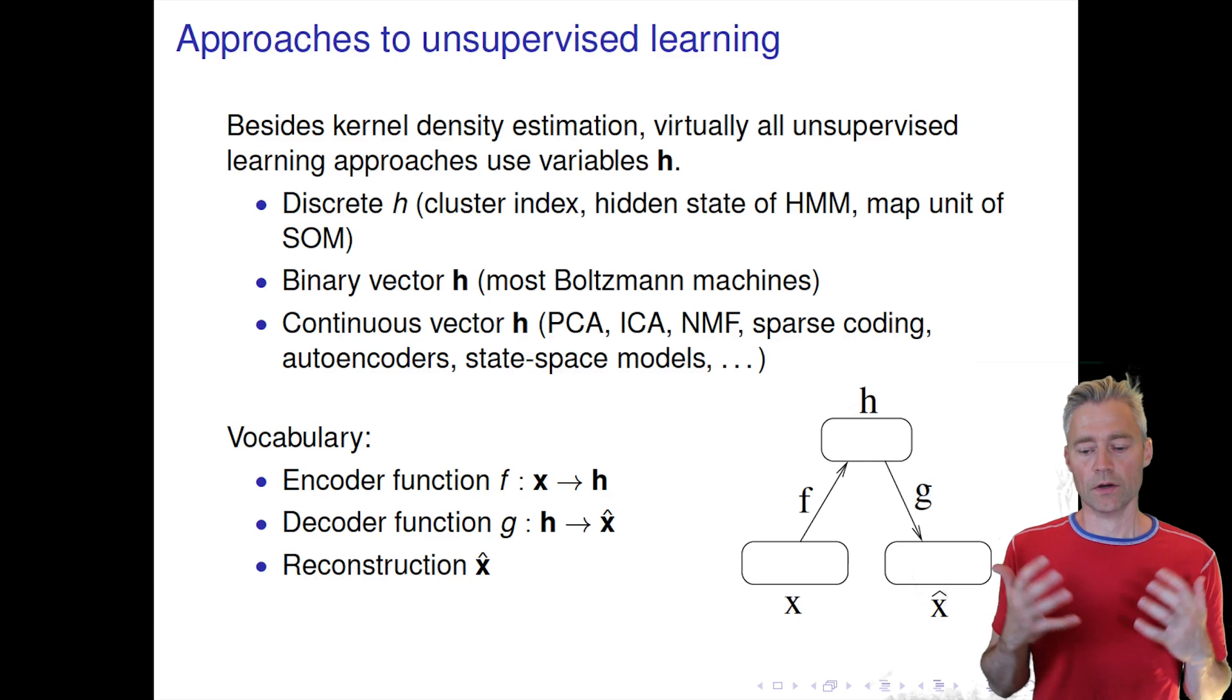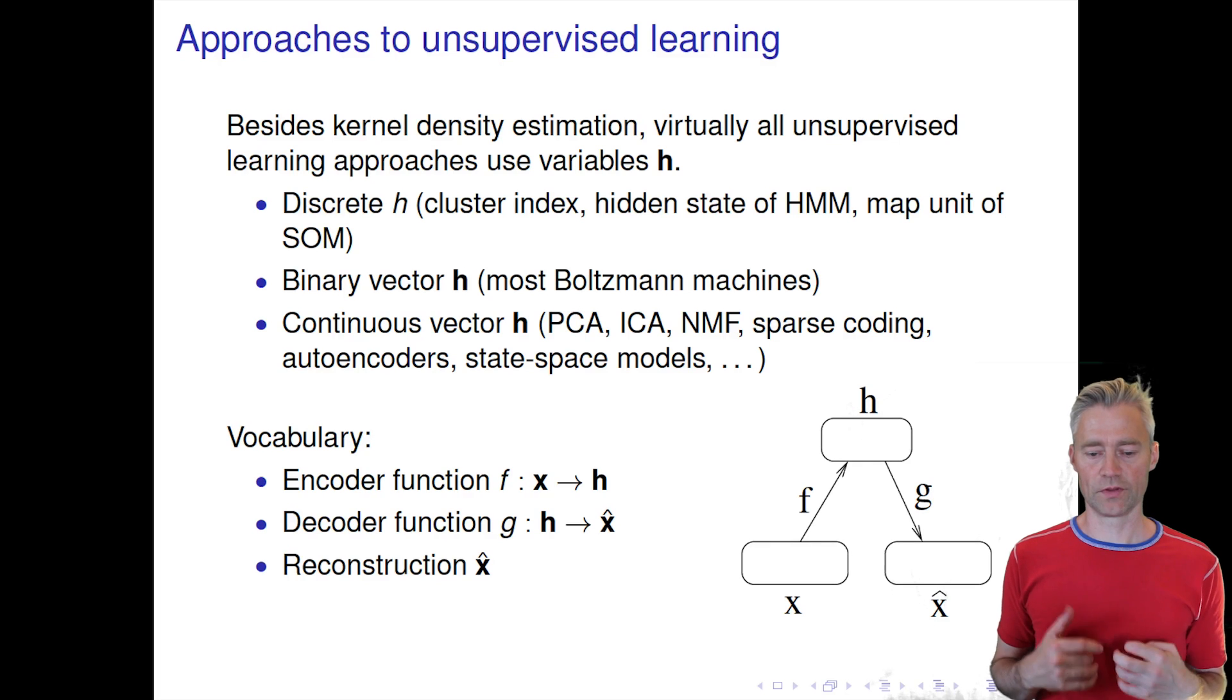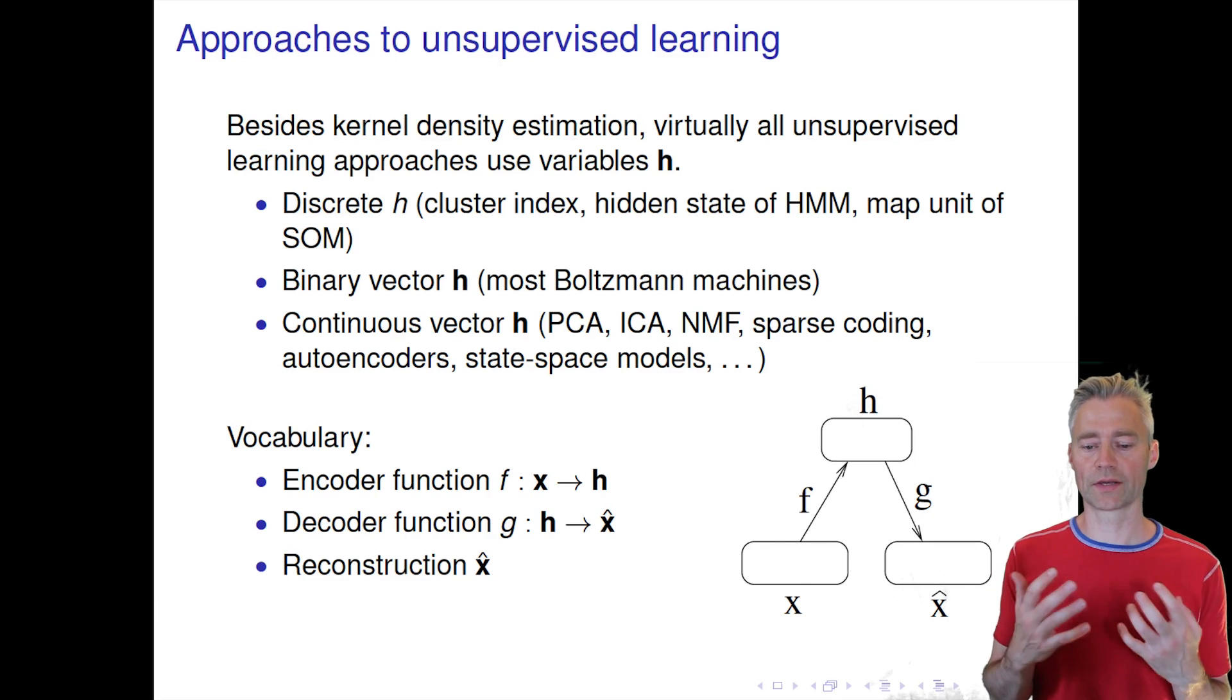This is how we formulate autoencoders normally. Of course, this is a trivial task because you can just use the identity function, so we have to be clever about designing a mapping where we learn something useful which is not just the identity function.